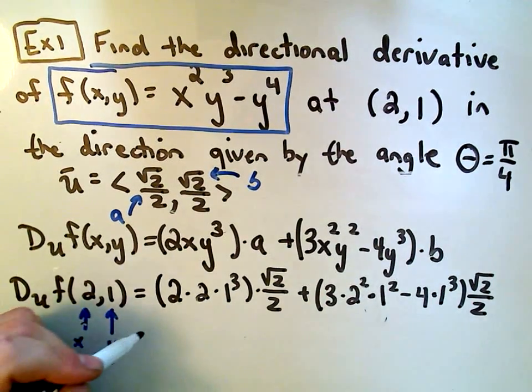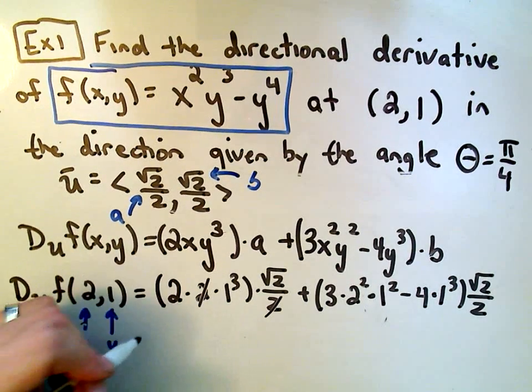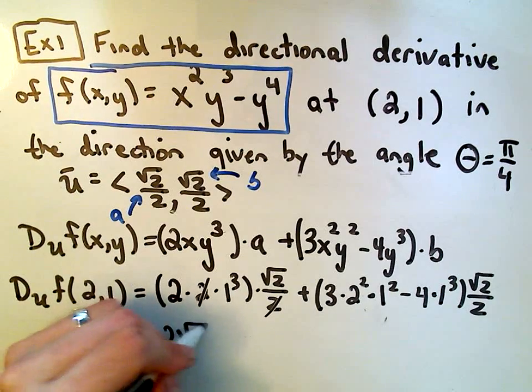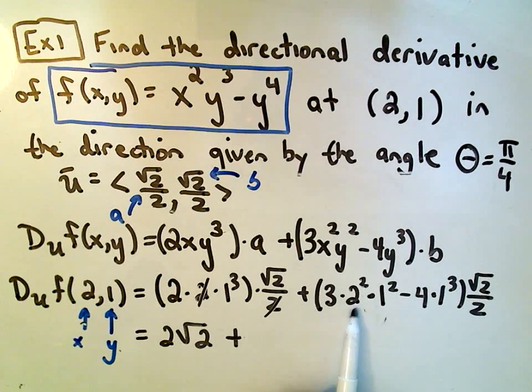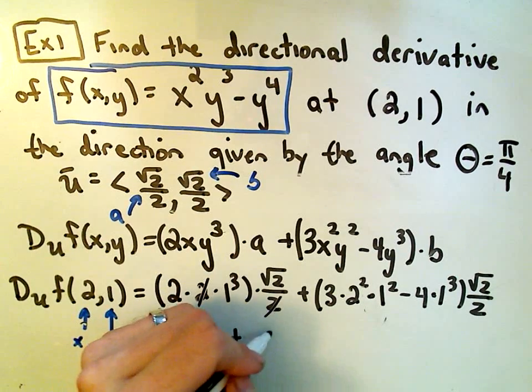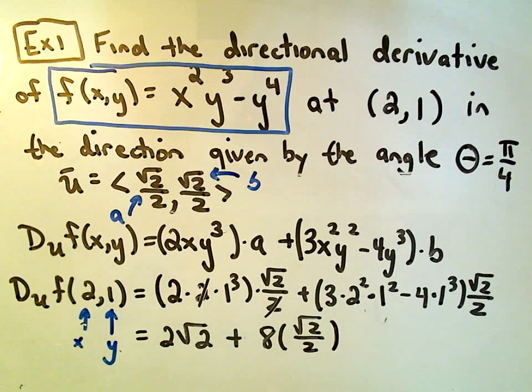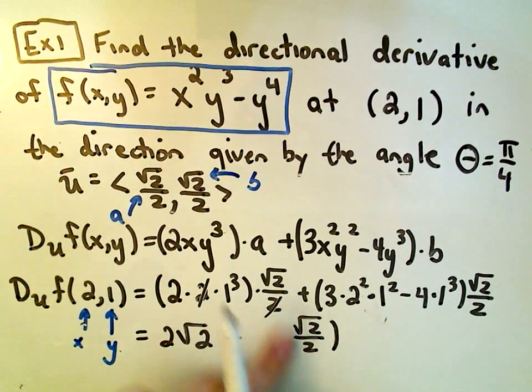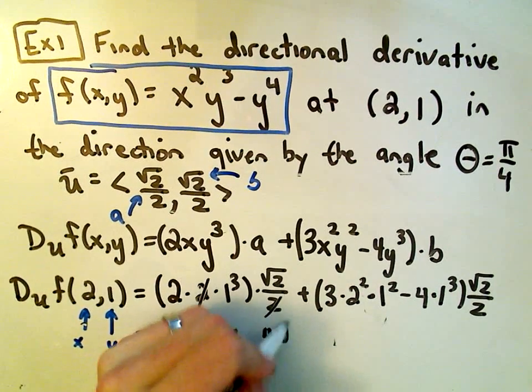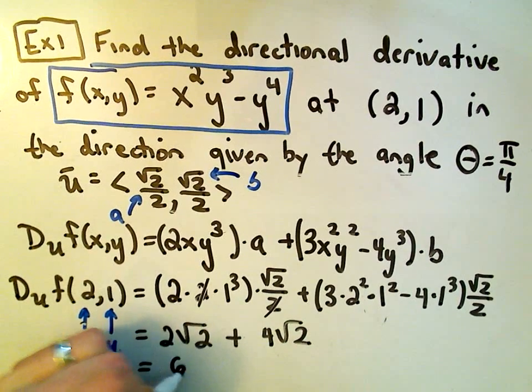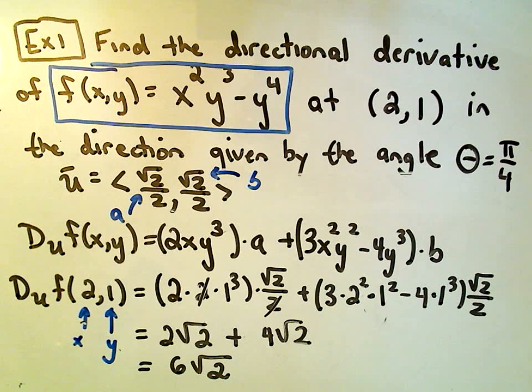So a little tedious, but not the end of the world. The 2 and the 2 will cancel. 1³ is 1. So it looks like from the first part we have 2√2. Plus, from the second part, 2² is 4 times 3 is 12 minus 4. It looks like we get 8 times √2/2. 8 over 2 is just gonna give us 4√2. If we just simplify that down, we'll simply get 6√2 as the value of the directional derivative.